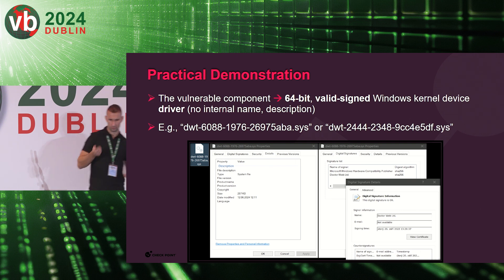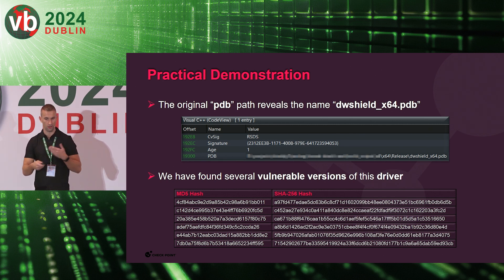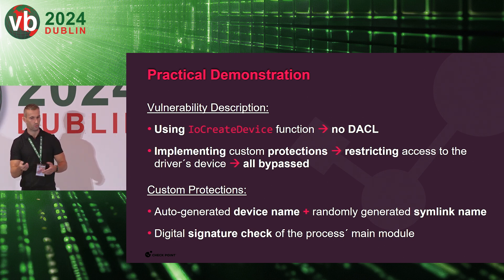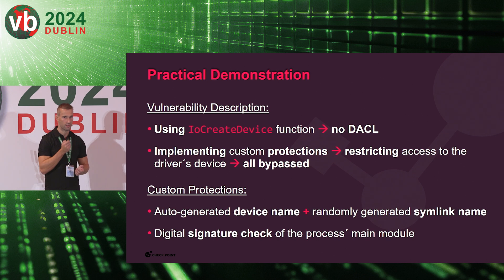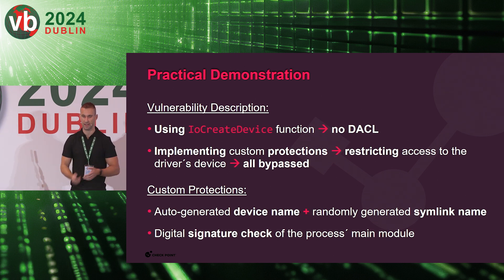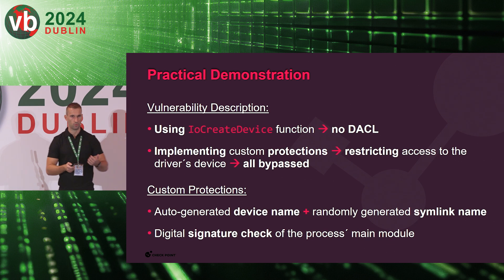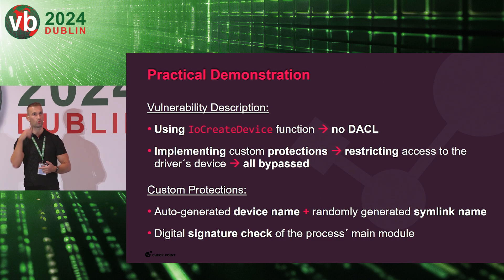Regarding the vulnerability: it uses IoCreateDevice directly, which means there is no way to specify a DACL, so everybody can access the device driver. However, the driver itself implemented some custom protections to restrict access. The first protection was an auto-generated device name and a randomly generated symlink name. The second protection was a digital signature check of the process main module — the process that tries to communicate with the device driver.